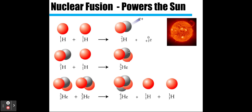Nuclear fusion is what powers the sun. Nuclear fusion is the opposite of nuclear fission — instead of splitting the atom apart, you're putting two nuclei together, and that releases a lot more energy. Fusion is about 10,000 times more powerful than fission.